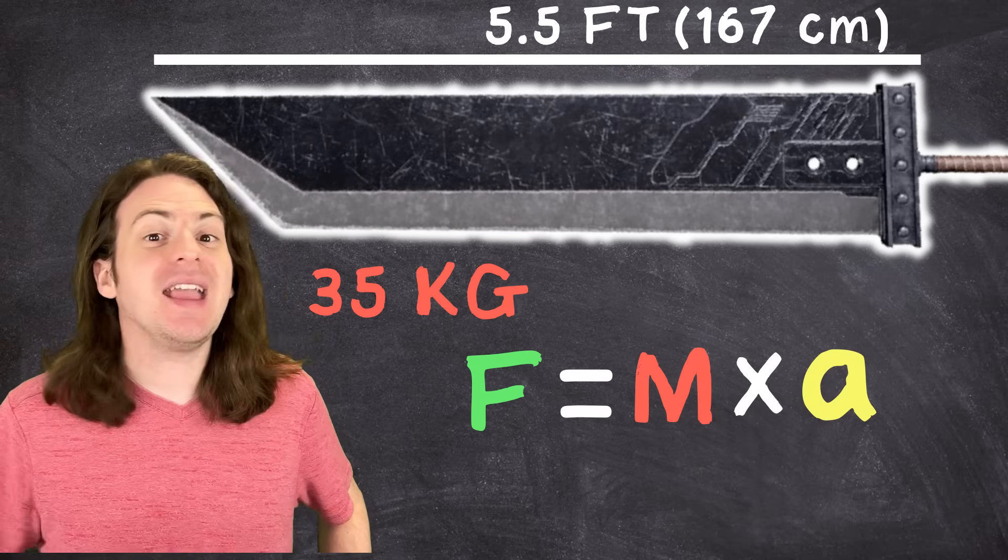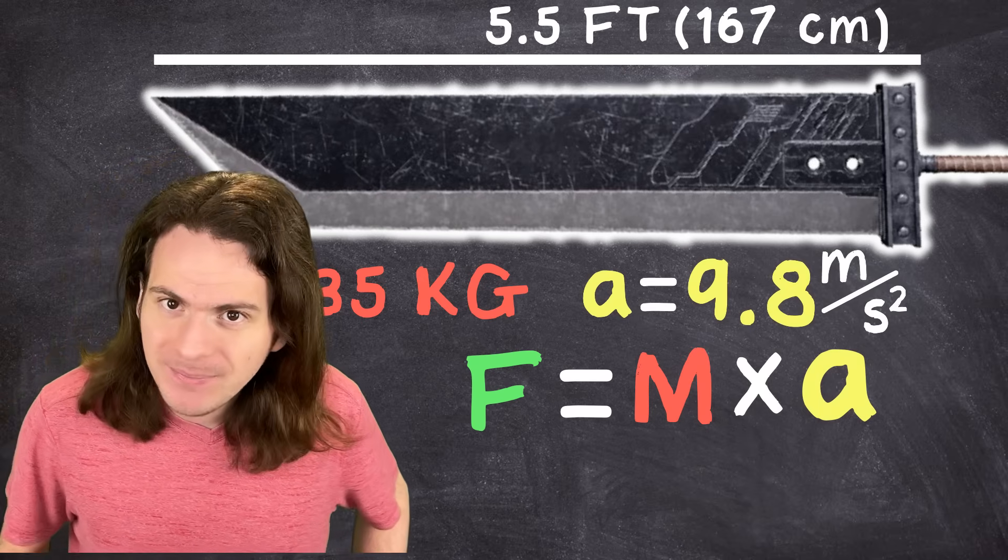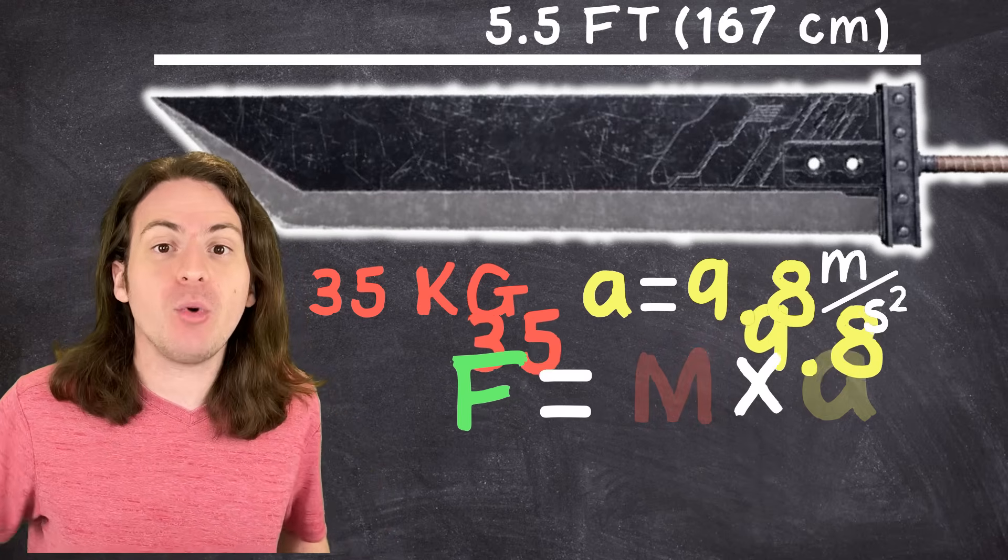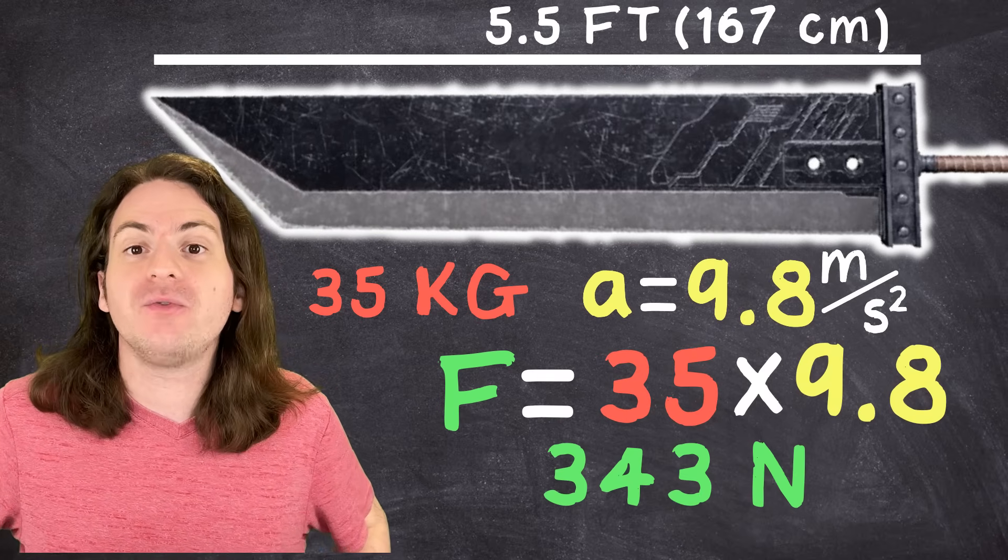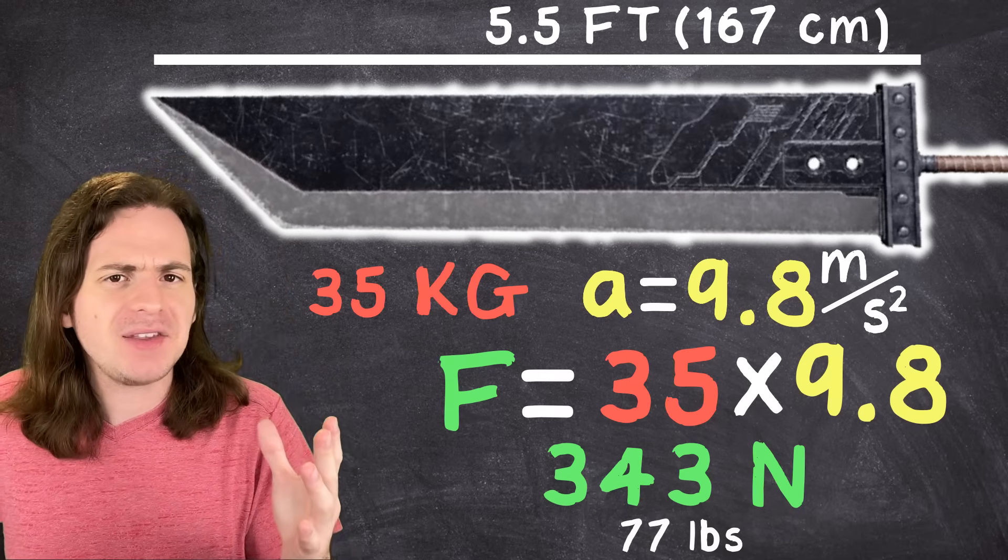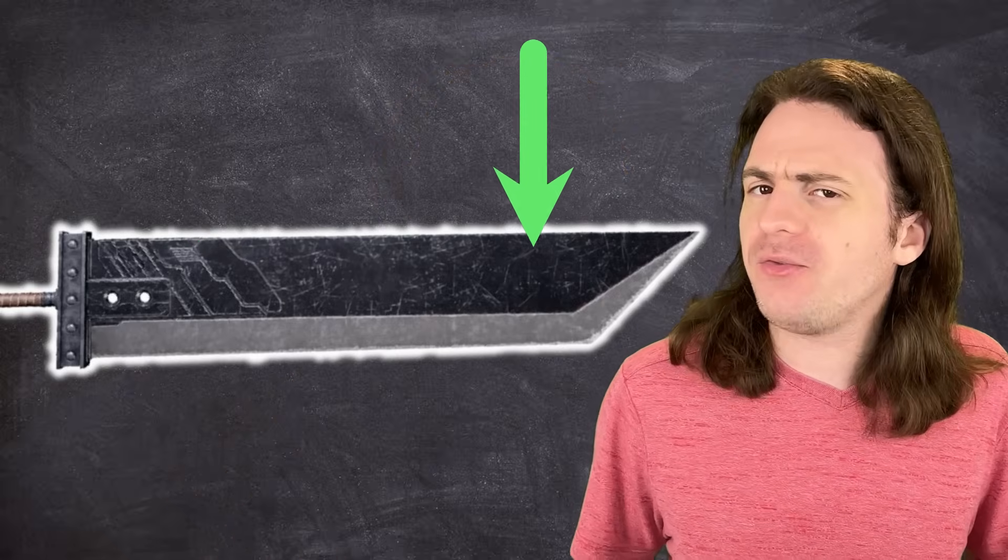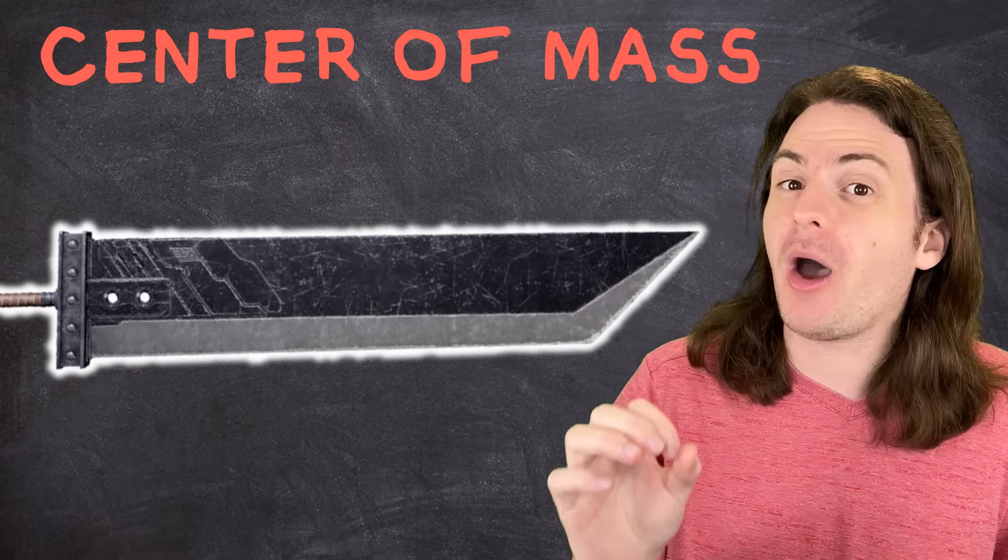And here on Earth, the acceleration due to gravity is 9.8 meters per second squared. I know Final Fantasy VII doesn't take place on Earth, but let's just pretend it does. So if we multiply 9.8 by 35 kilograms, we get a force of 343 newtons, or 77 pounds. And remember, we're just guessing at the sword's mass, so this could be way off. If you've got your own estimate, just grab a calculator and pop it in here. Anyway, now we have the force, but in order to find the moment, we need to know where that force is being applied. And to do that, we need to know the sword's center of mass.